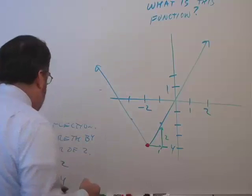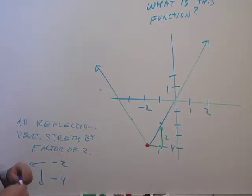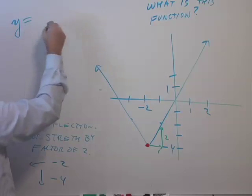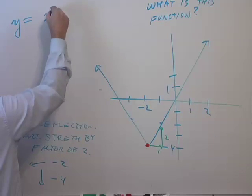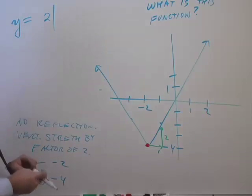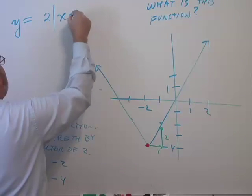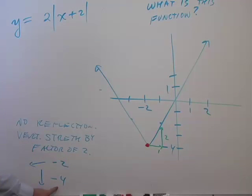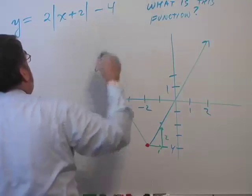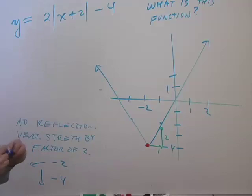But with no reflection and a vertical stretch by a factor of two, that means we're multiplying the original absolute value by two. And we're replacing x with what? x minus negative two or x plus two. So inside I've got x plus two. And then the vertical shift means I'm going to subtract four from everything. Minus four.